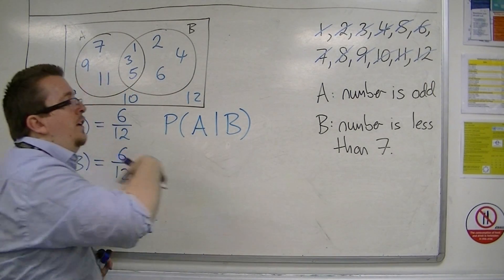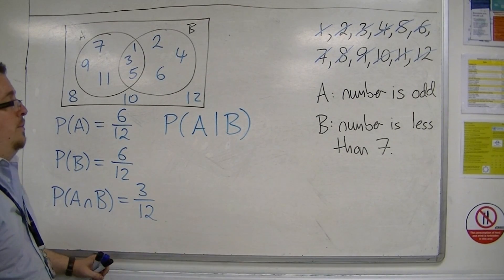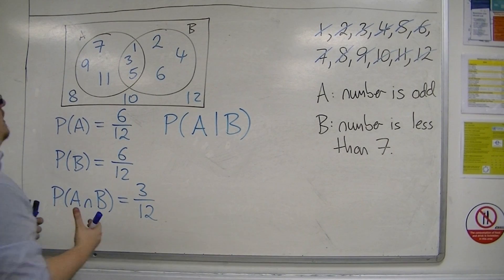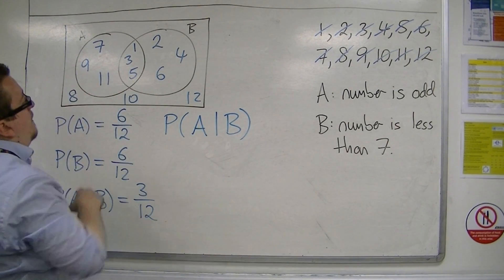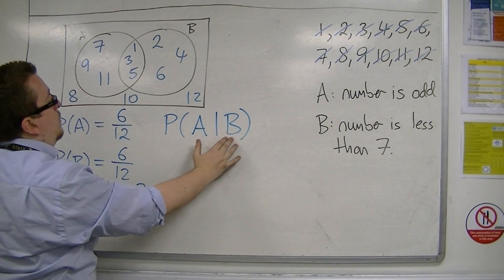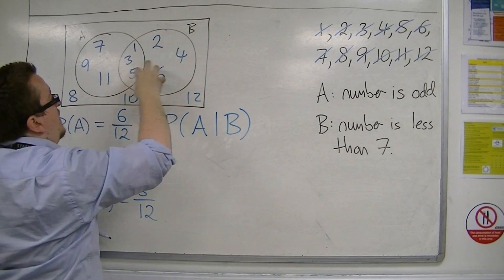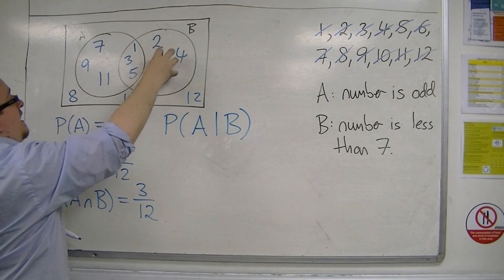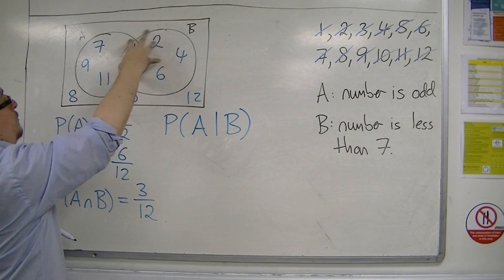A, given that B has already happened, that I already know B. So, if you look at it this way on the diagram, given that I already know it is within B, what is the probability of selecting an A that is within B?